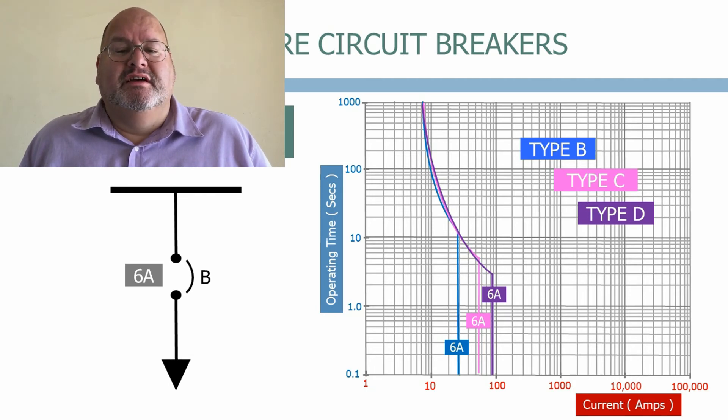In most modern systems MCBs have replaced fuses as they are easy to discriminate with other devices and don't need to be replaced every time a fault occurs. The wiring in fuses also deteriorates over time especially on circuits which are heavily loaded. MCBs don't face this issue.